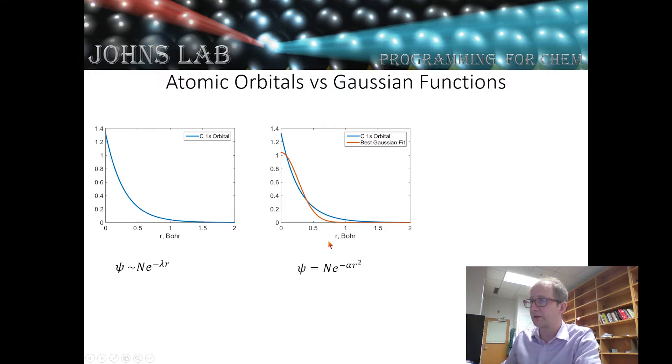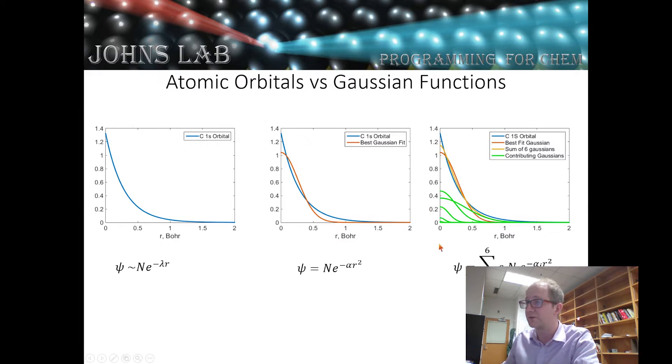And the percentage of each Gaussian that we're going to add is fixed. So whenever we talk about this particular basis function, we would have a fixed value, the c sub i, that would be fixed for each one of these individual Gaussians. And we call the c sub i the degree of contraction. The alpha sub i is the exponent.